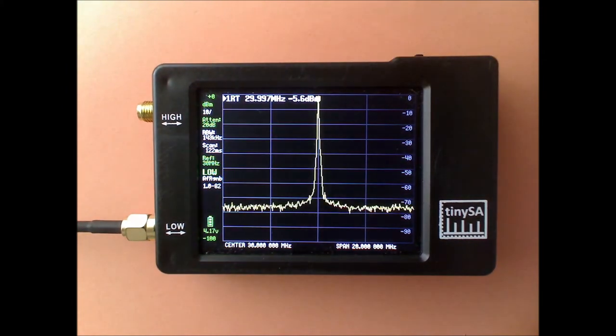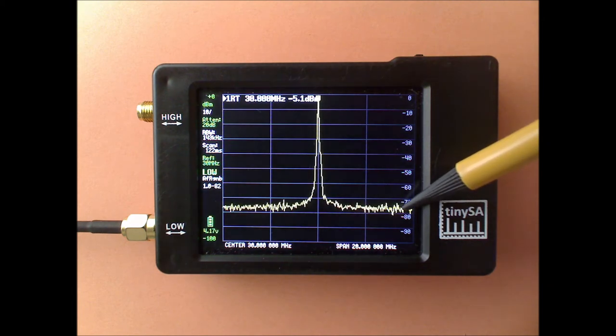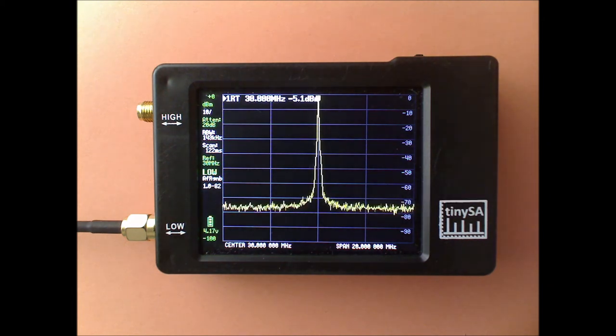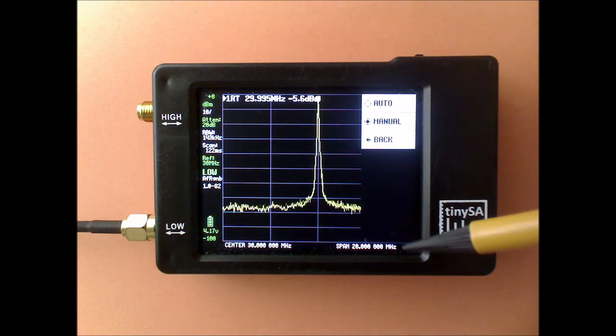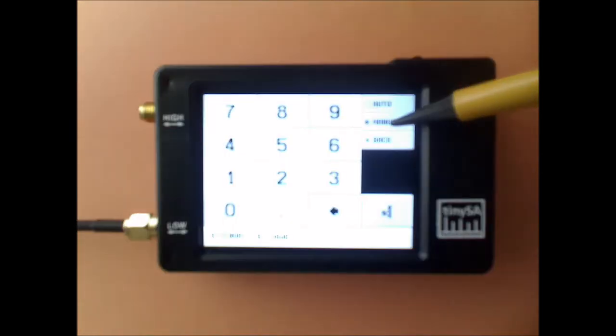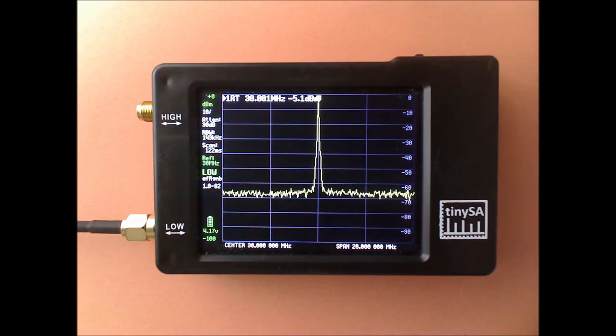The signal at the top stays the same because the TinySA in its level measurements compensates for this change in attenuation. But if the attenuation increases, the noise floor moves up. And that's why you always have to have a compromise between not too much but also not too little attenuation. I'm going back to automatic attenuation here.